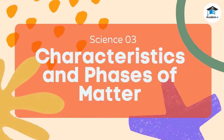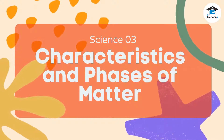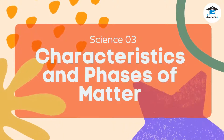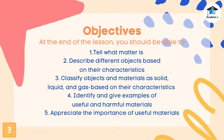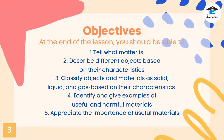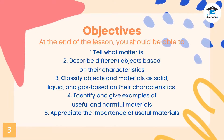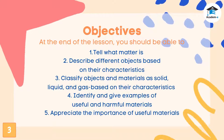Science 3: Characteristics and Phases of Matter. Objectives: at the end of the lesson you should be able to tell what matter is, describe different objects based on their characteristics, classify objects and materials as solid, liquid, and gas based on their characteristics, identify and give examples